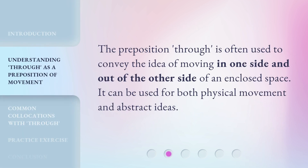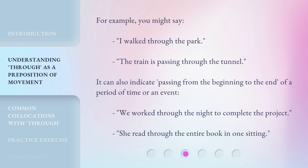The preposition through is often used to convey the idea of moving in one side and out of the other side of an enclosed space. It can be used for both physical movement and abstract ideas. For example, you might say: I walked through the park. The train is passing through the tunnel. It can also indicate passing from the beginning to the end of a period of time or an event. We worked through the night to complete the project. She read through the entire book in one sitting.